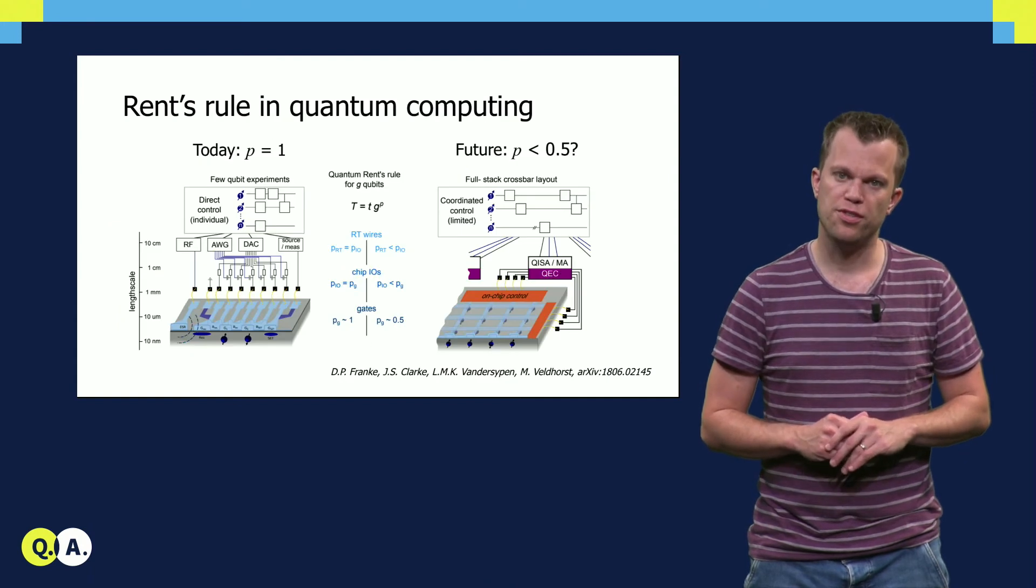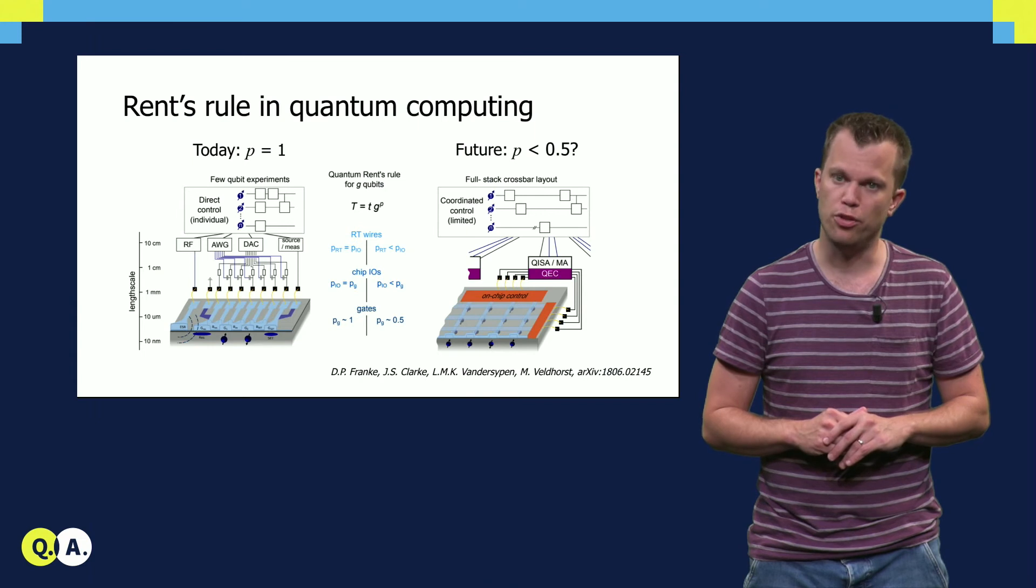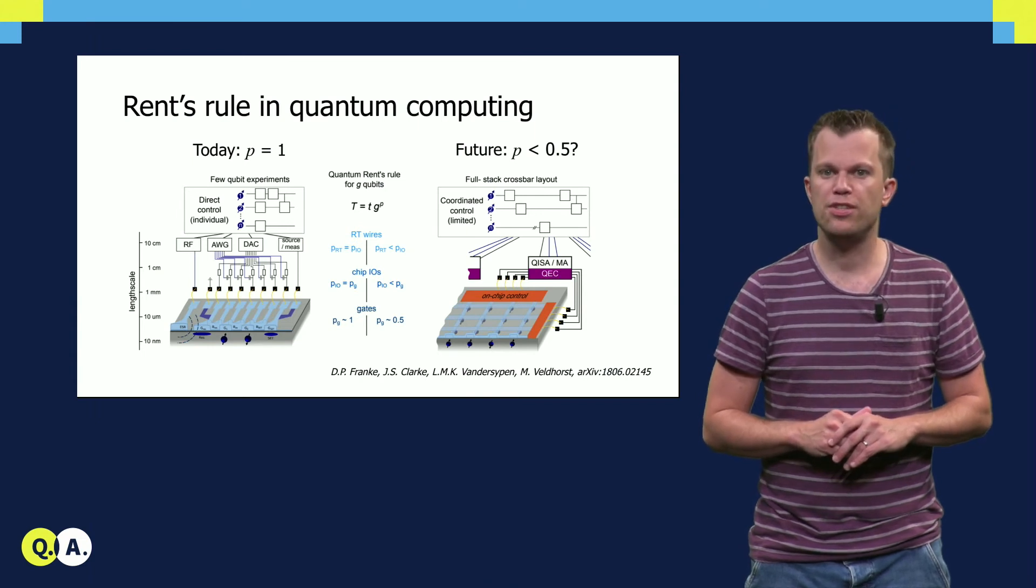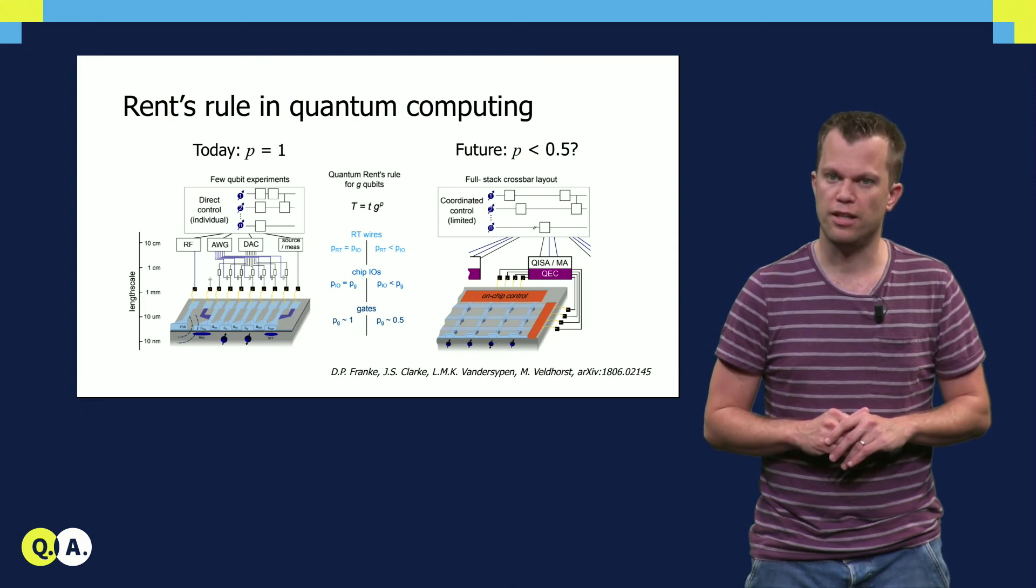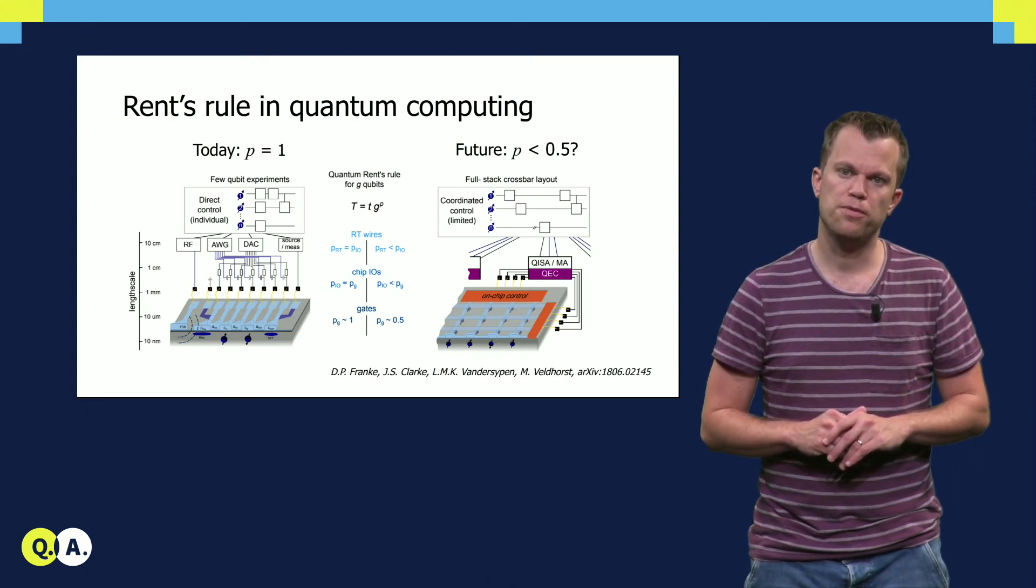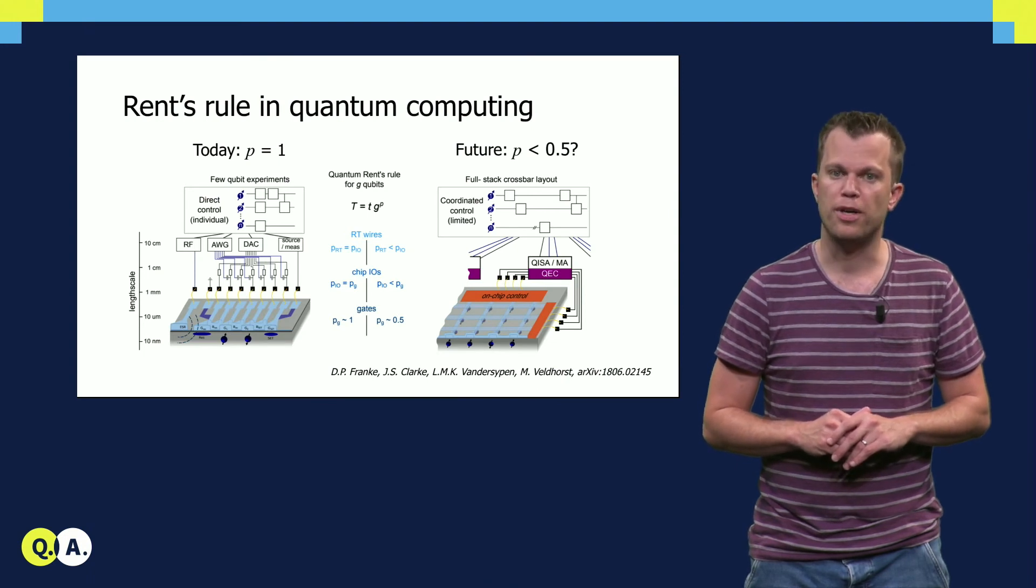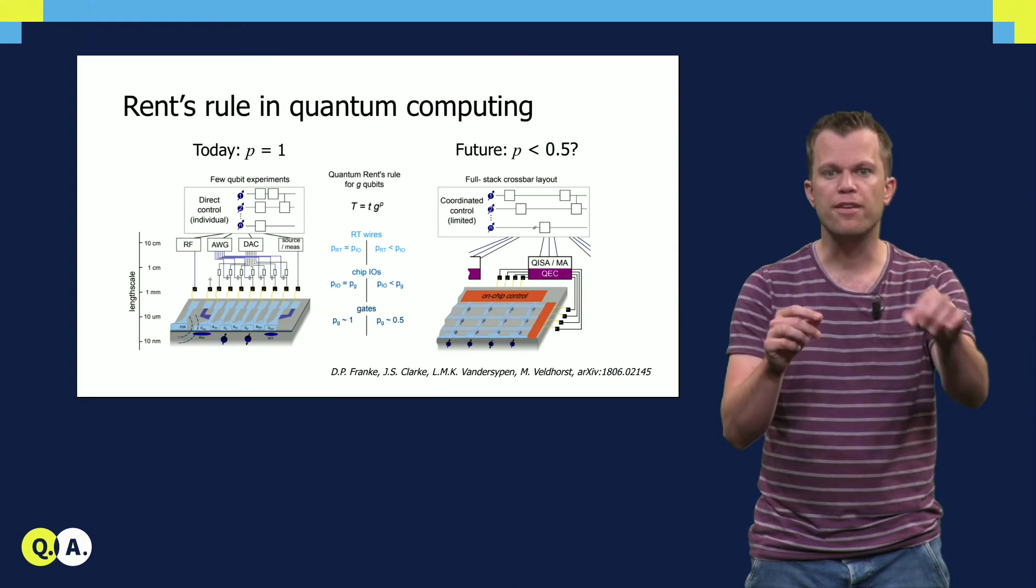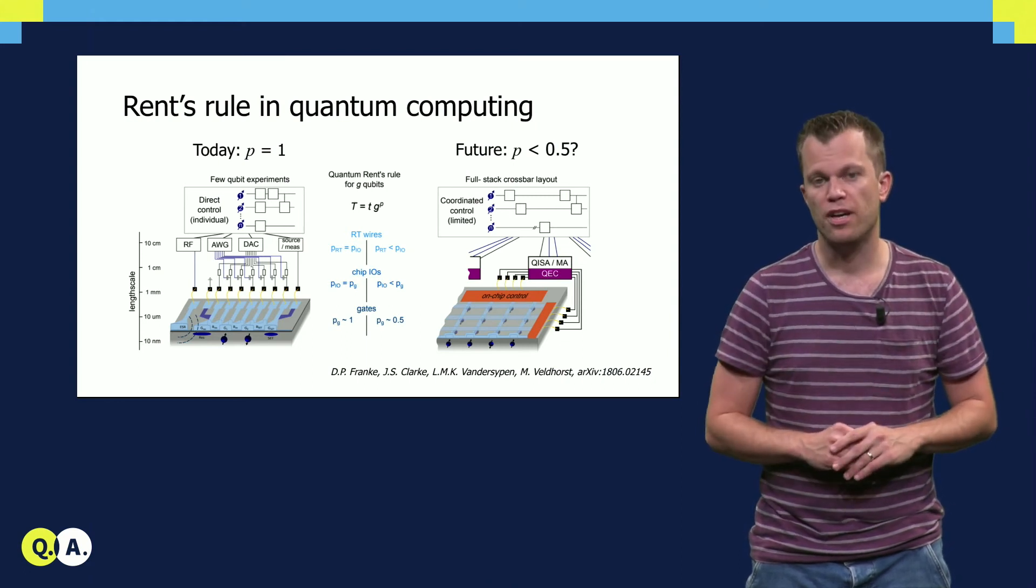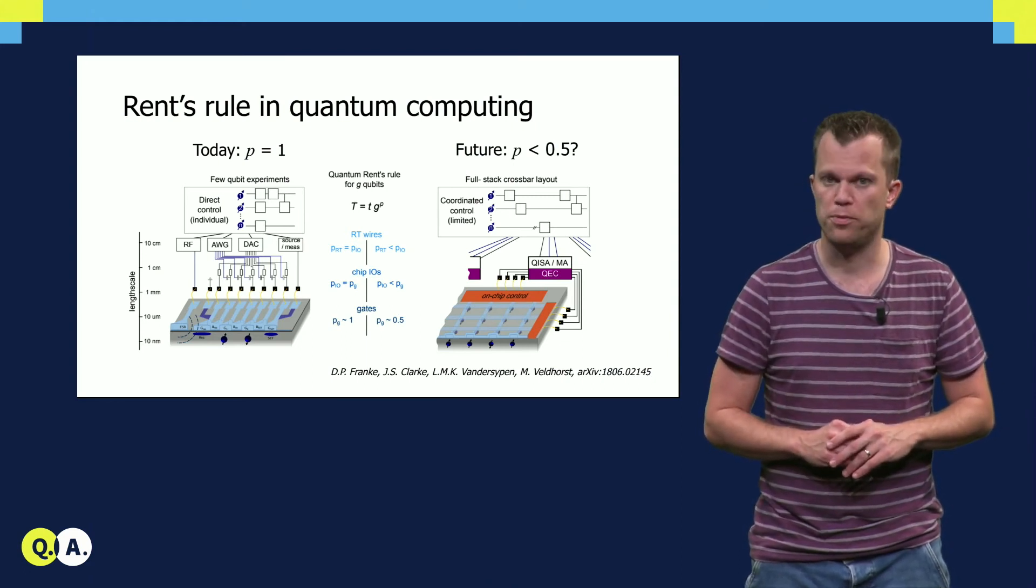Today's quantum devices require individual electronics and connectors for each and every qubit. Increasing these systems to large numbers will clearly require a different scaling law. Concepts from classical memory technology, such as crossbar layouts where signals only have to come from the sides to address a large array, are now being proposed as an efficient way forward for quantum systems.